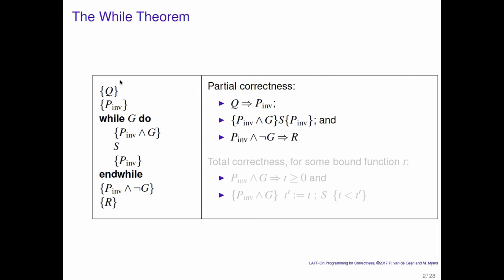So what's the while theorem? Well, on the left you have a prototypical while loop that we have now annotated with a precondition Q, a postcondition R, and a loop invariant P_inv — hopefully you'll realize that INV stands for invariant. And then we have a loop guard G.